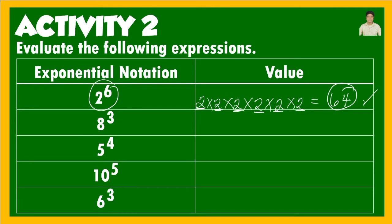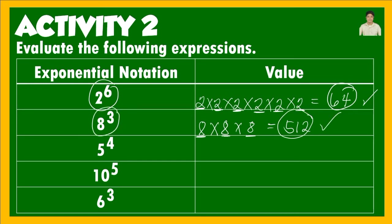Next, 8 cubed is 8 times 8 times 8. The product of 8 and 8 is 64, and multiplying again by 8, the answer is 512. Therefore, 8 cubed or 8 to the 3rd power is equal to 512. Next, 5 to the 4th power equals 5 times 5 times 5 times 5.